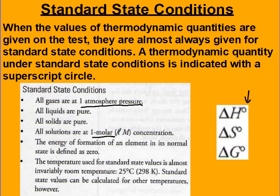The energy of formation of elements, such as sodium or diatomics like F₂ and Br₂ in their normal state, are defined as zero. And temperature for standard state is 25 degrees Celsius, which is 298 Kelvin.